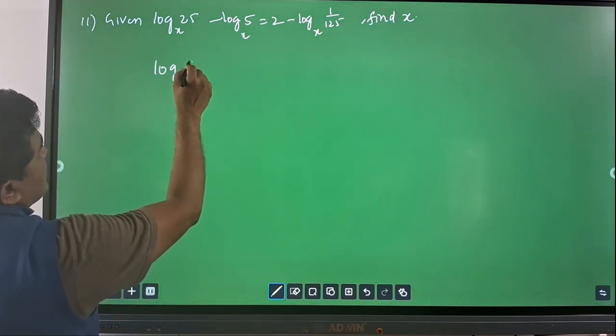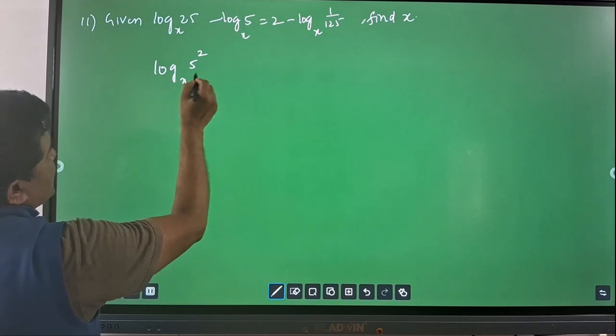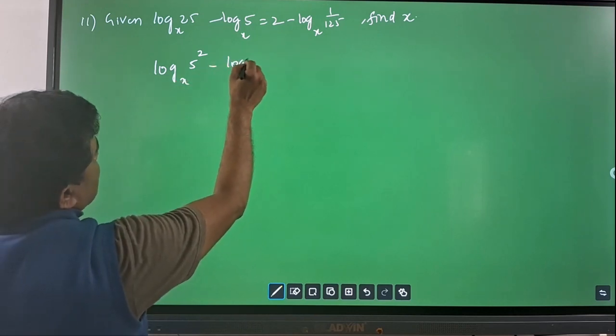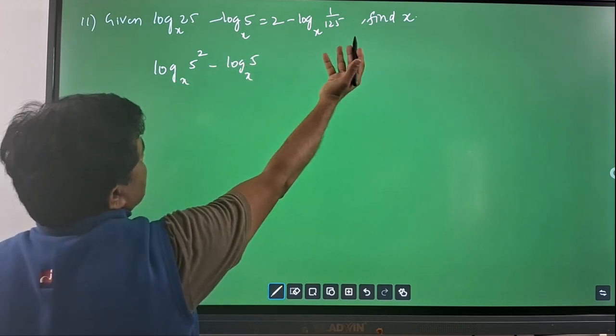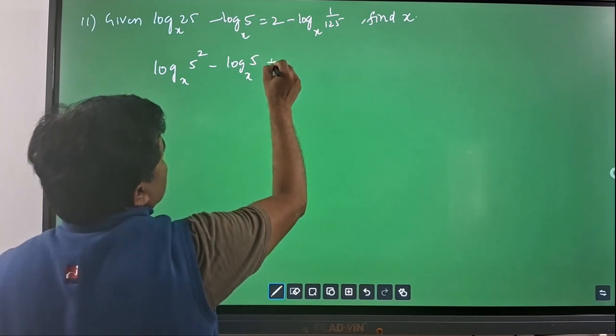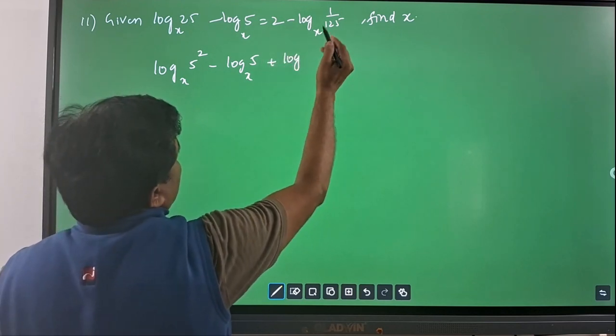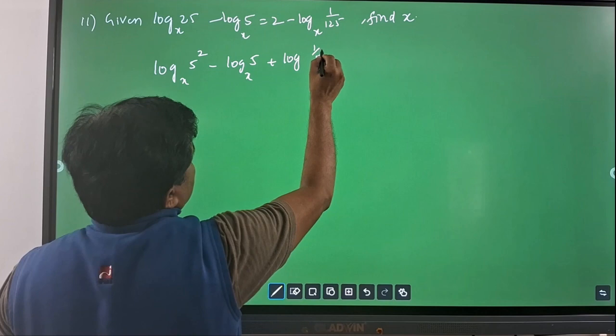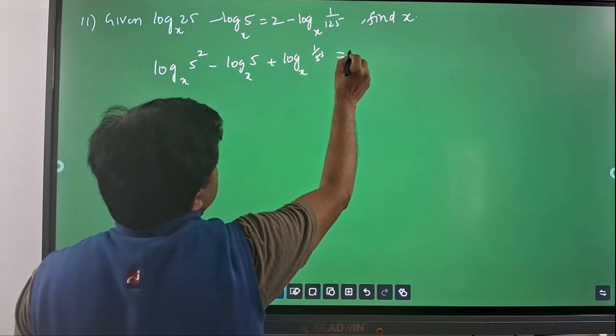So, you will have log 25, I can write 5 square with base x minus log 5 with base x. If that one comes to here, you will have plus log 125, I can write 1 by 5 cube with base x, which is equal to 2.